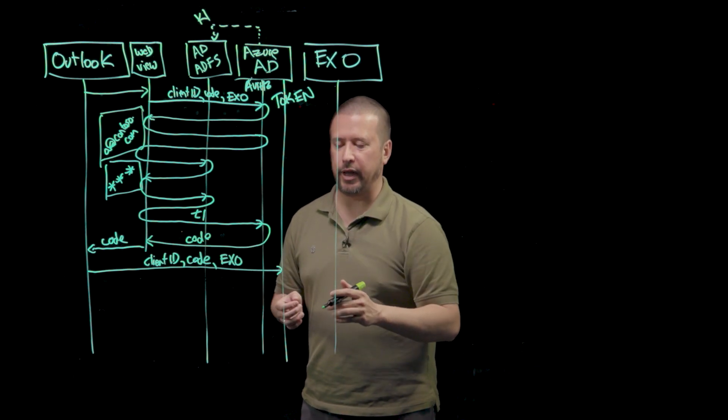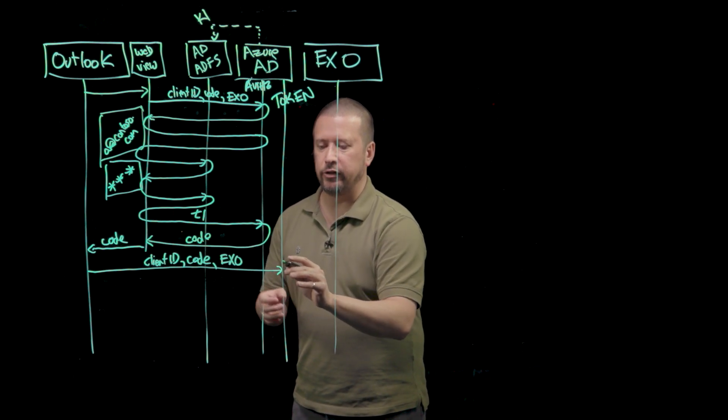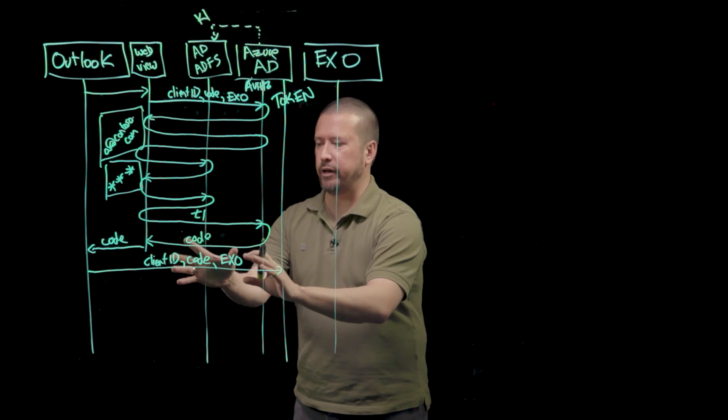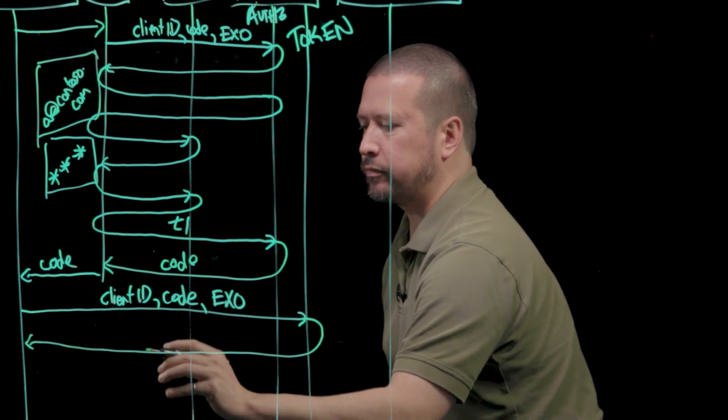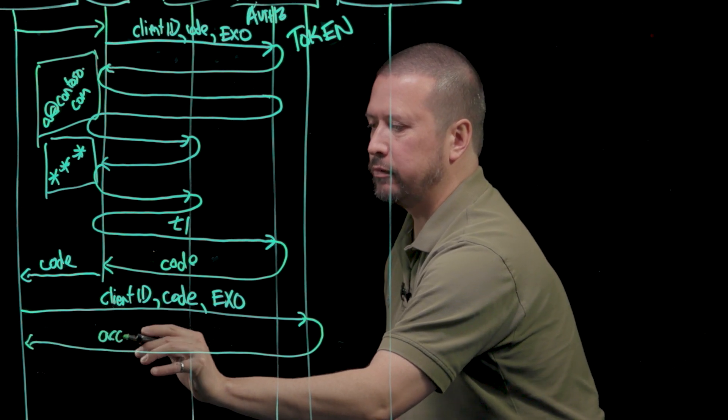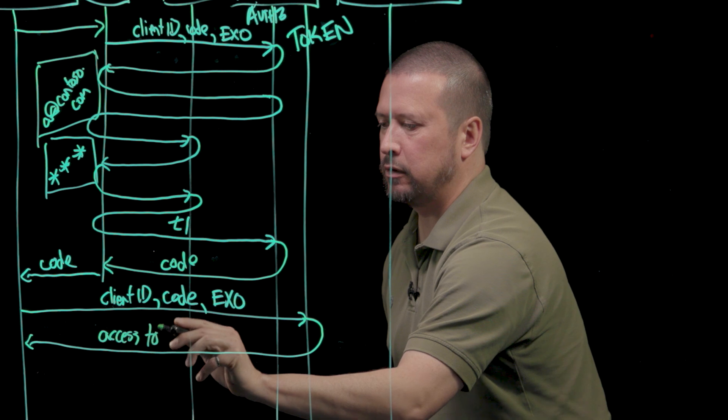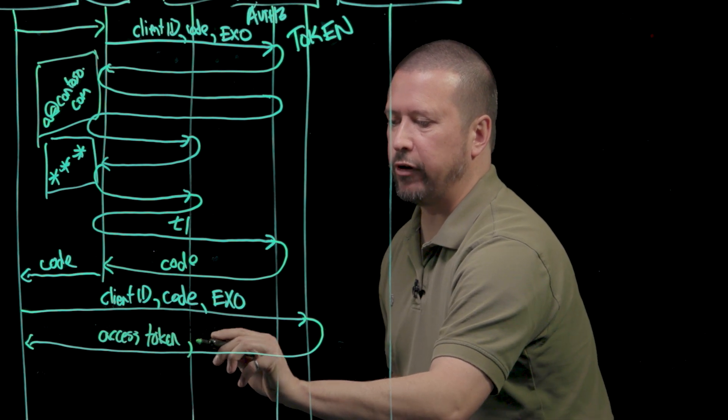The code is actually a form of a short-lived security token. It's only good for use with Azure Active Directory. Azure Active Directory will validate all of this information and then send back to Outlook an access token and a refresh token.